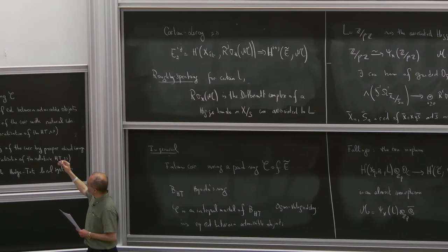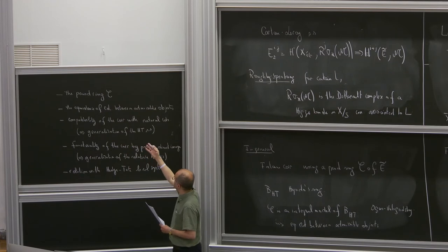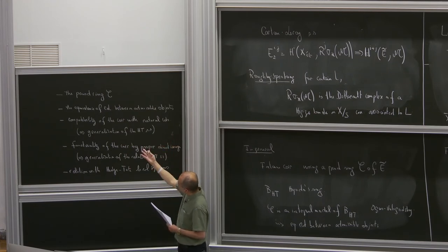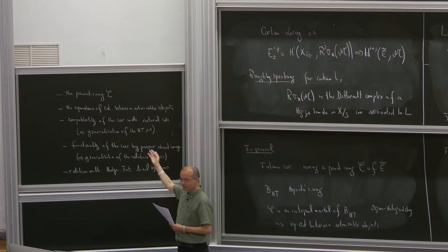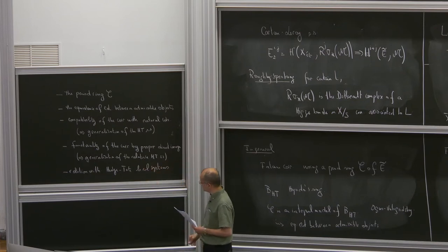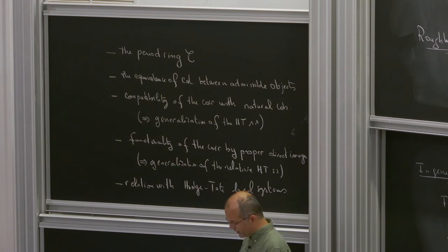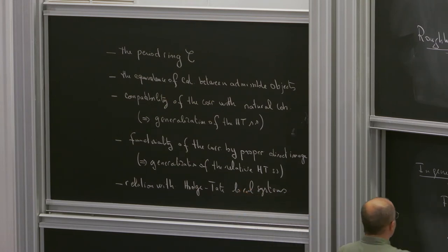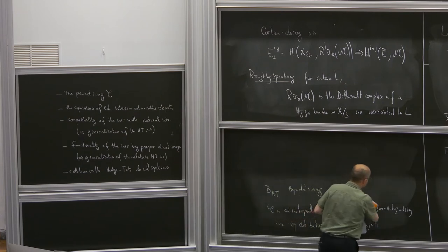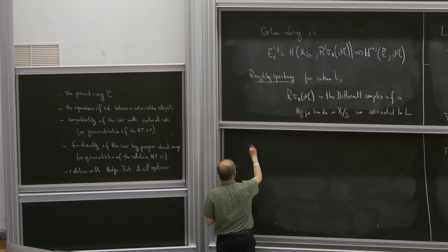Here is the plan: I will first explain the period ring C, then discuss the equivalence of categories between admissible objects and prove its compatibility with the natural cohomologies, leading to a generalization of the Hodge-Tate spectral sequence. Then I will discuss the functoriality of the correspondence by proper direct image, leading to a generalization of the relative Hodge-Tate spectral sequence. Finally I will discuss the relation with Hodge-Tate local systems.